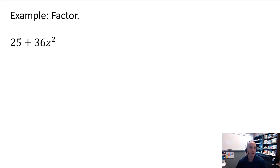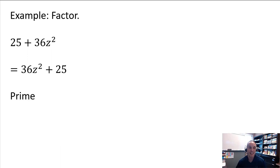Now consider 25 plus 36z squared. Put it in descending order and you'll notice there is no minus — it's not a difference. There's no GCF either. This polynomial cannot factor; it is prime.